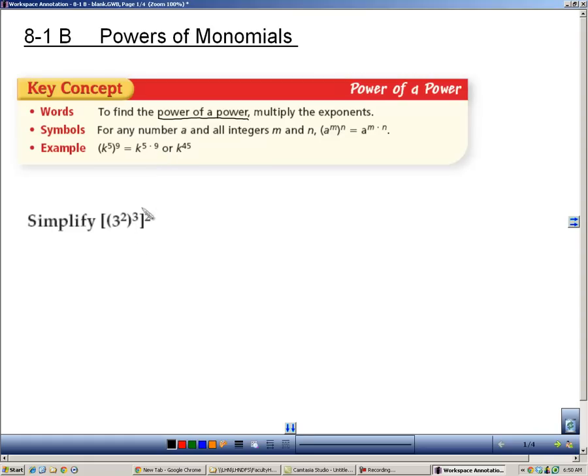This is 3 to the 2nd to the 3rd to the 2nd. So in this case, because we're taking a power to another power and another power, you end up having to multiply all those. 2 times 3 is 6, 6 times 2 is 12, so 3 to the 12th.